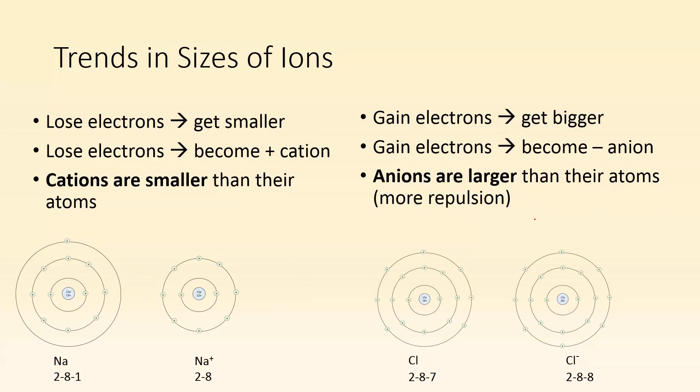Sizes of ions. Let's think about different kinds of ions. We've got cations. When you lose electrons, you get smaller. I hope that makes sense intuitively. If you lose something, there's less of it there. If you lose electrons, you become smaller. Also, if you lose electrons, you become a positive cation. So you can simply say cations are smaller than their atoms. If I have sodium here, 2-8-1 is its electron configuration. When it becomes sodium plus one, how did it do that? It lost that one electron. So now it's just got two energy levels. It's smaller.